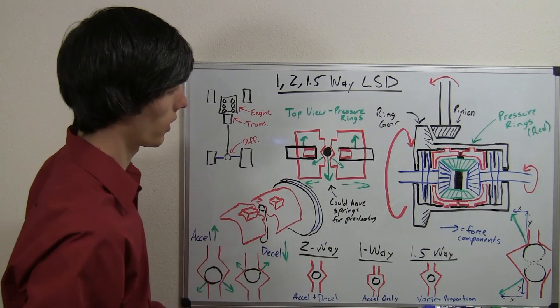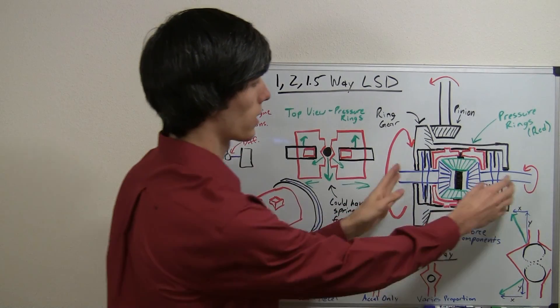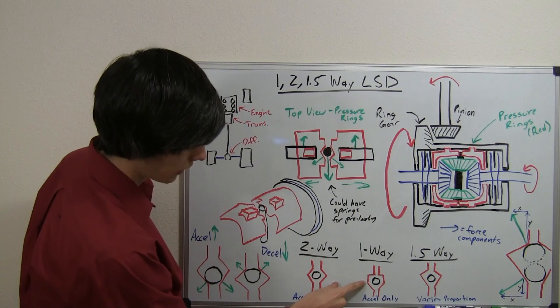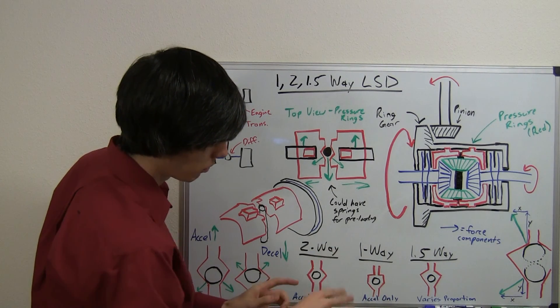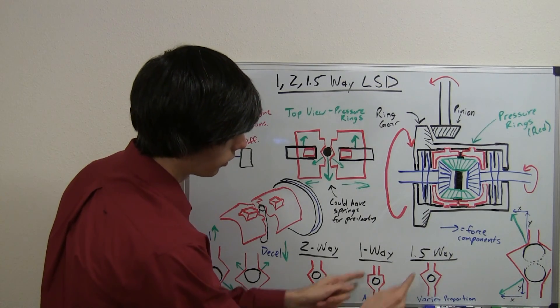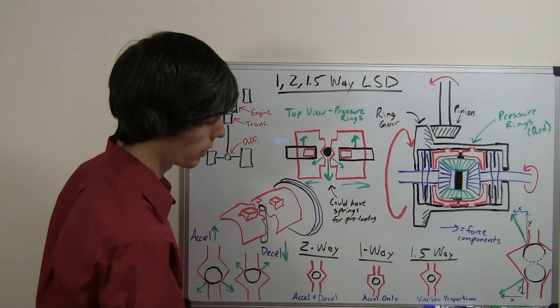A one-way only allows the differential to lock up these clutch packs when you accelerate. So the design is like this: when you accelerate, you push on the gas pedal, and that pinion shaft comes back, it pushes these two plates out, once again locks up your differential. When you decelerate, when you slam on the brakes, it pushes up against a flat surface.